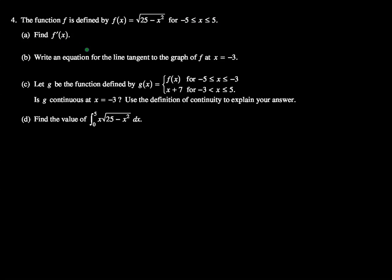Find f prime of x. Pretty easy, that's just a chain rule, so let's do that. So we have f(x) equals the square root of 25 minus x squared. And I'll put in the bounds. So negative five is less than or equal to x is less than or equal to five.